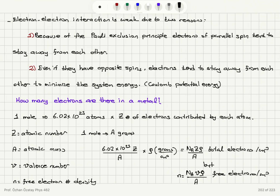Second, electron-electron interactions are weak for two reasons. The Pauli exclusion principle tells us that electrons with parallel spins must stay away from each other — they cannot occupy the same quantum level. And even if they have opposite spins, electrons tend to stay away from each other due to the Coulomb repulsion. So electrons tend to stay away from each other and tend to stay away from the ion cores because they pass by very quickly.